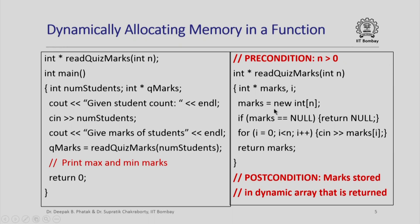Inside read_quiz_marks, I dynamically allocate an integer array of size n, and then if the dynamic allocation failed, I return null. Note that I could have put this as part of my postcondition — in good programming practice, you should indicate this. If the dynamic allocation was successful, I will simply iterate through a for loop, read in all the marks, store them in the marks array, and finally return marks. The return value is basically the address of the first element in the dynamically allocated array, which is returned to the main function.